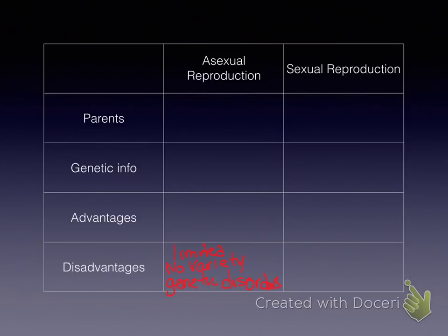For disadvantages: in asexual reproduction, it's limited — there's no variety. And if there's a genetic disorder, there's no getting rid of it because it's an exact copy. So if a cell has arthritis, the next cell is going to have arthritis, and the next cell is going to have arthritis. Whatever's there stays there. Whereas in sexual reproduction, because there are two organisms involved, it requires more time, energy, and effort.